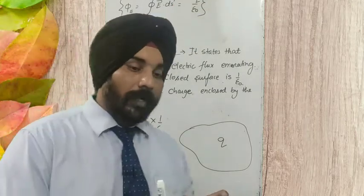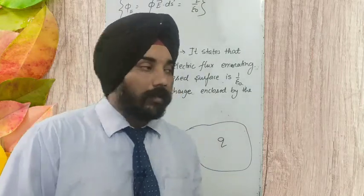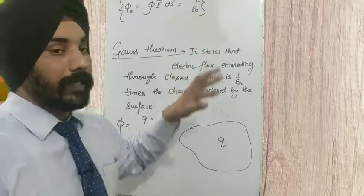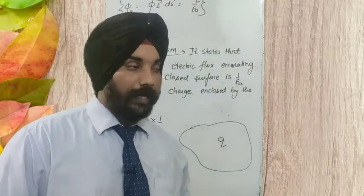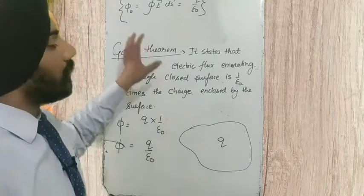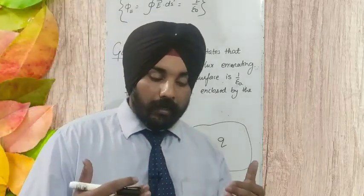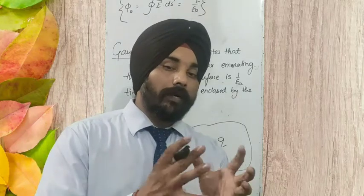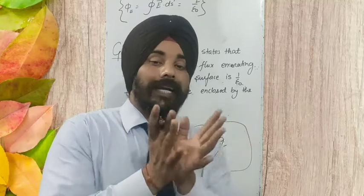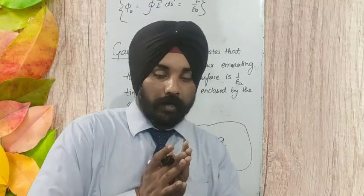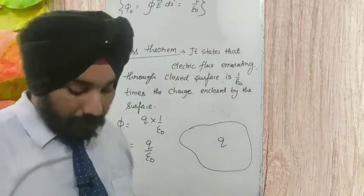If a surface is enclosing 2Q charge, then it will be 2Q upon epsilon naught. For 3Q charge, it is 3Q upon epsilon naught. So this is the Gauss theorem — it states that the flux coming out from a closed surface depends upon the charge enclosed by the surface. This is the concept of Gauss theorem.